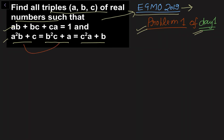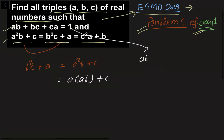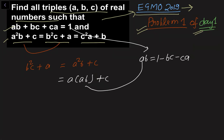If I take the first two expressions, I get B²(C + A) = A²(B + C). I can rewrite the right-hand side as A·(AB + C). Now using the first equation, AB = 1 − BC − CA. Let's put this value in and see what we get.